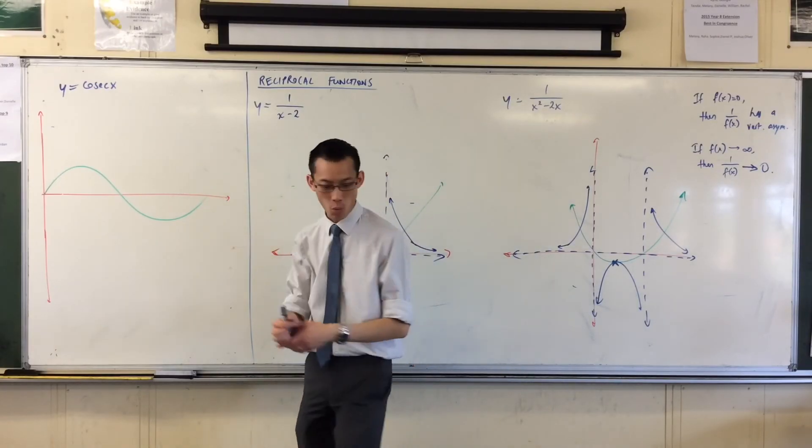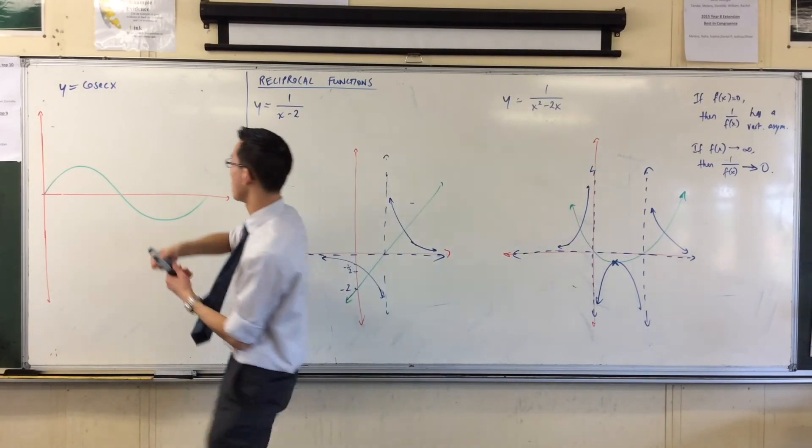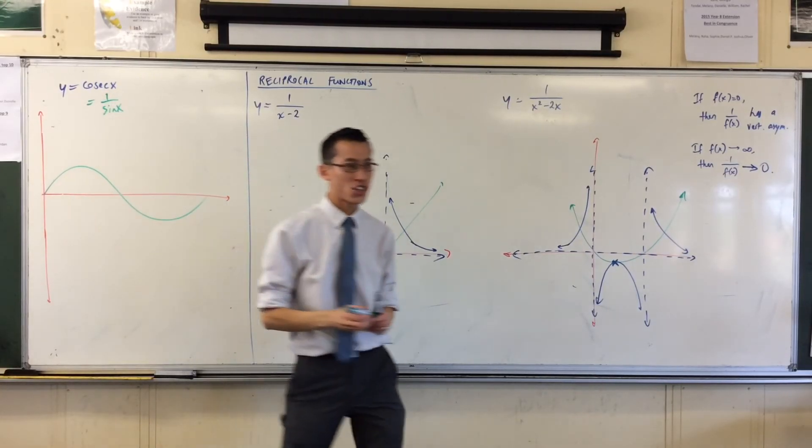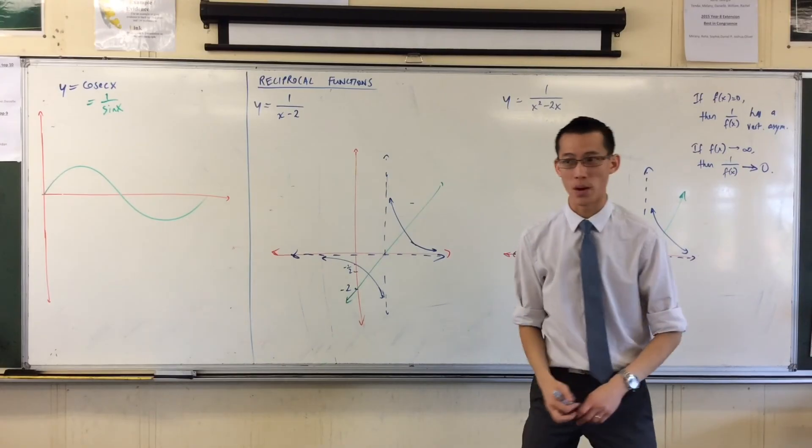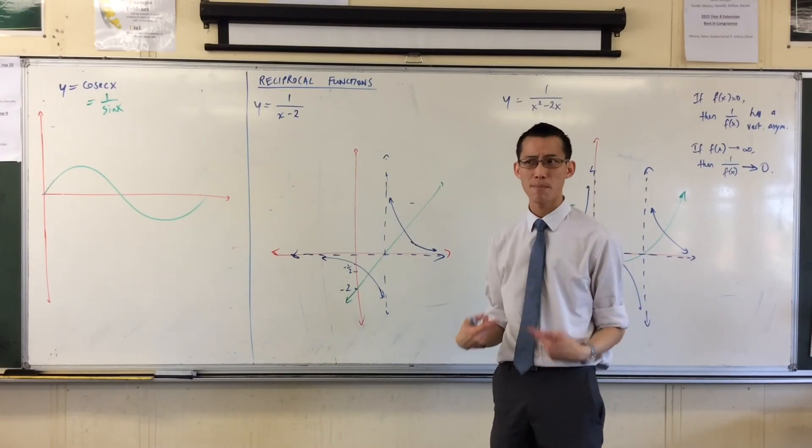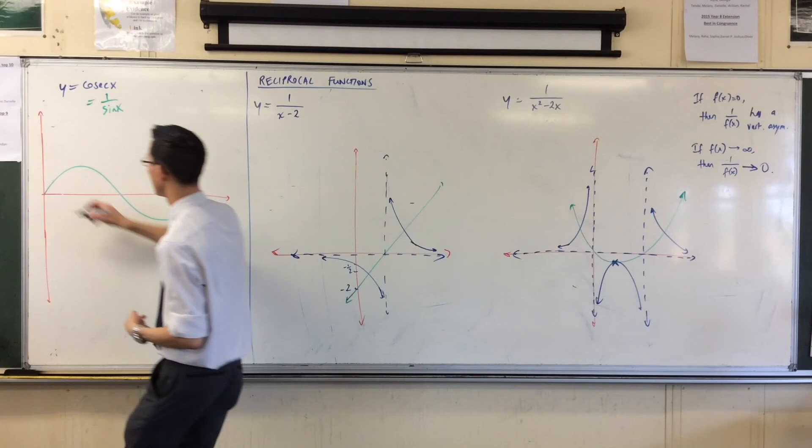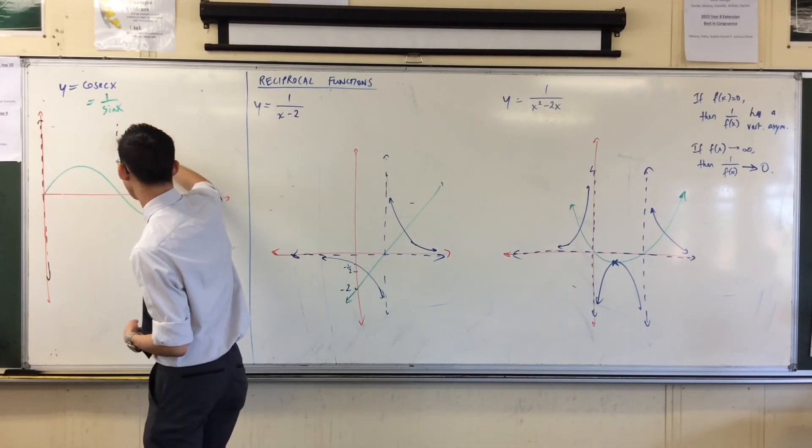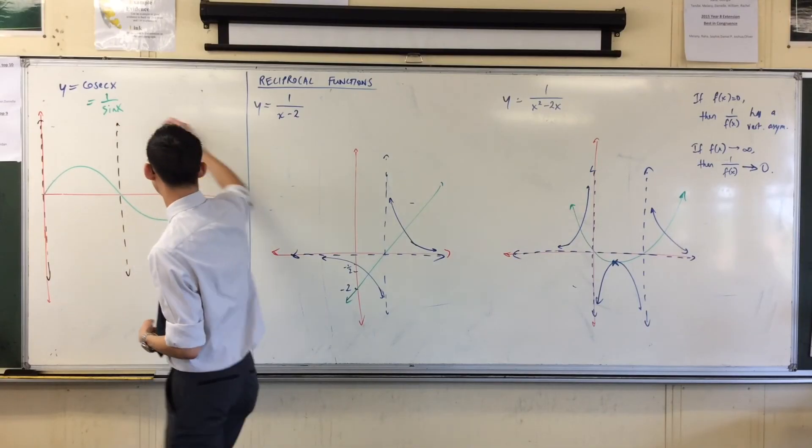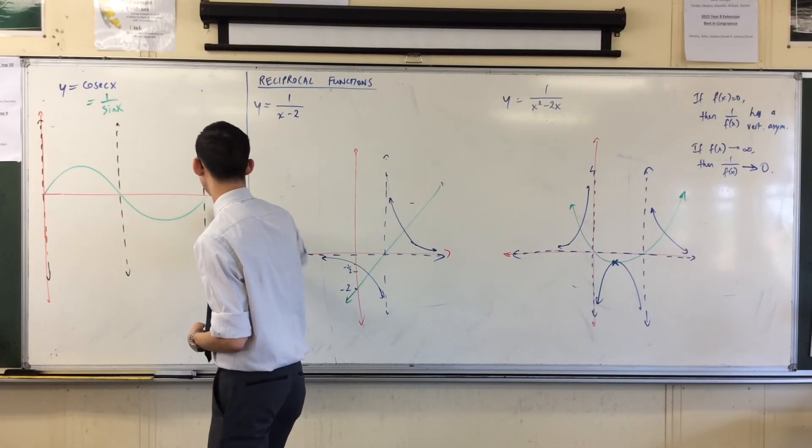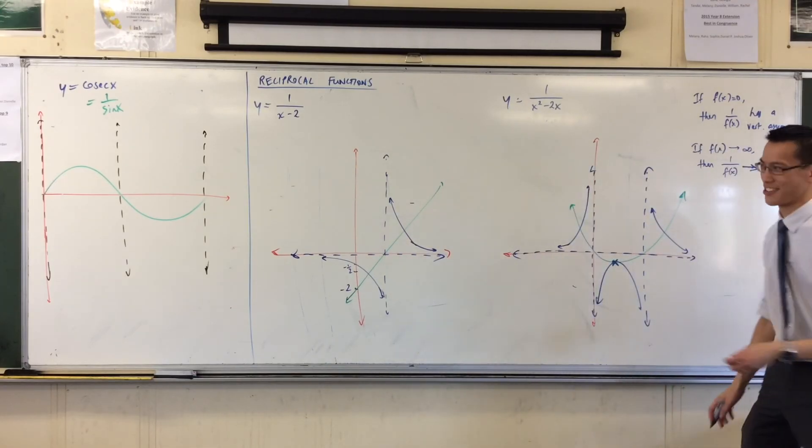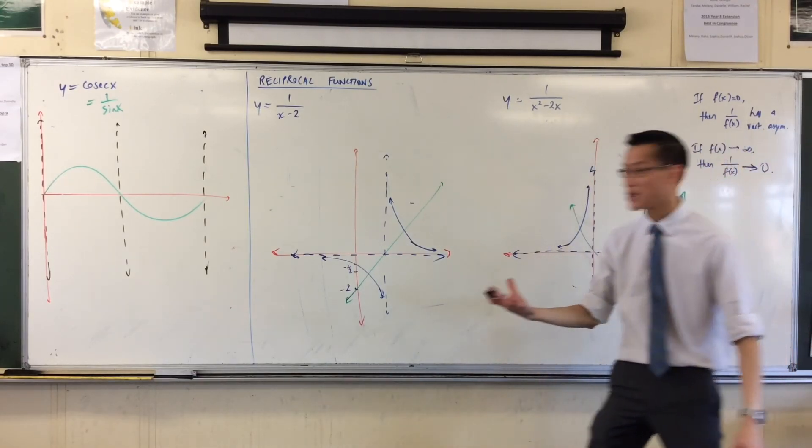The function, Y equals sine x, which is actually what I'm envisaging here. Sine x is 0 at all of those points. So that means when I take the reciprocal, I'm getting those vertical asymptotes. Okay, now I've got those in place. That's great.